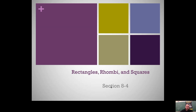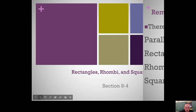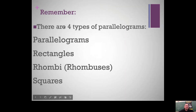This is section 8.4 on rectangles, rhombi — which is plural for rhombus — and squares. These are special types of parallelograms; each of these was underneath the parallelogram on the family tree. The four types: you could just be a parallelogram and not one of these shapes, or you could be a specific type like a rectangle, a rhombus, or a square.